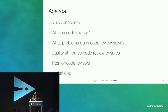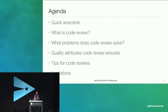Here's an agenda for the things I'm going to cover. I'll tell you a quick anecdote about myself. We'll define code review, talk about some of the problems that code review solves, some of the architectural quality attributes that code review ensures, some good tips for doing code reviews, and of course, some limitations of code reviews.